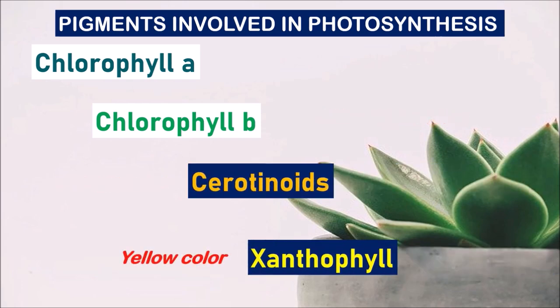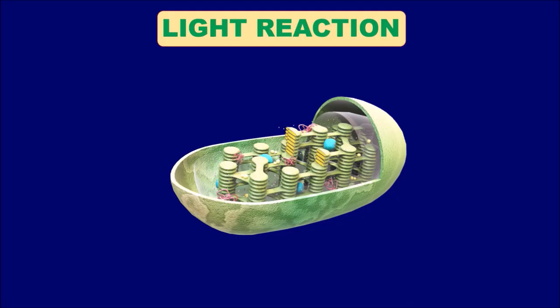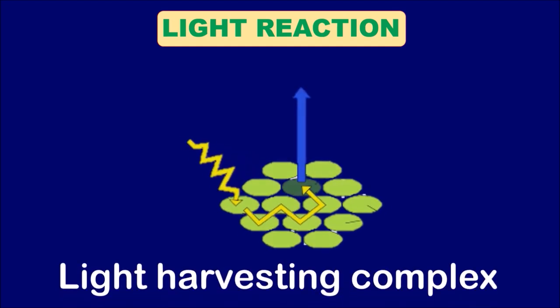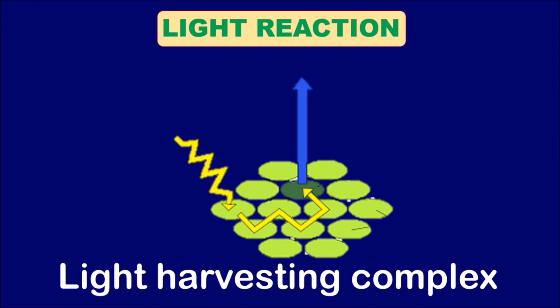Light reaction: A series of chemical reactions occur initiated by light. So it is known as photochemical phase or light dependent reaction. It occurs in grana of chloroplasts which constitutes of stacks of thylakoids. The earlier said pigments are embedded in the thylakoid membrane in the form of light harvesting complex at many points.